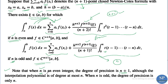Note that when n is an even integer, the degree of precision is n+1. This is because the error term contains the (n+2)th derivative, so the precision is n+1. Although the interpolating polynomial is of degree at most n, the degree of precision is n+1 when n is even. But when n is odd, the error term contains only the (n+1)th derivative, so the degree of precision is only n.